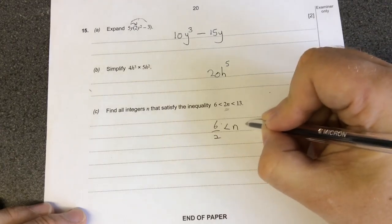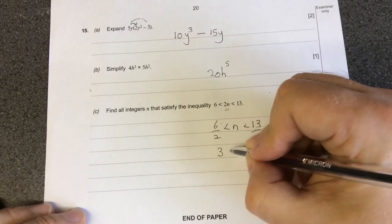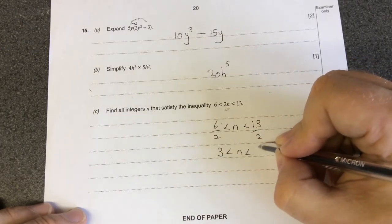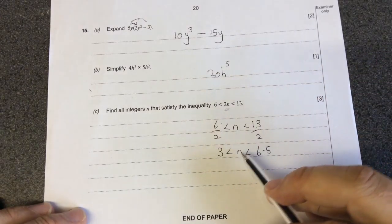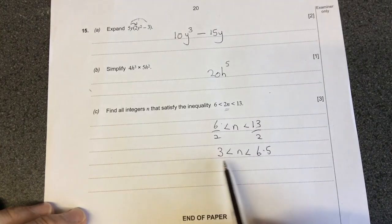So I'm dividing both sides by 2 and that leaves me 6 divided by 2 is 3 and 13 divided by 2 is 6.5. So that means n is bigger than 3 and less than 6.5. An integer is a whole number.